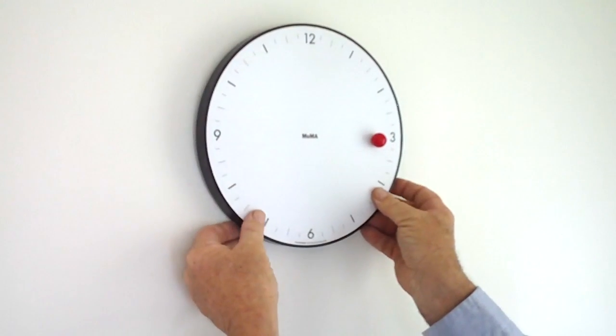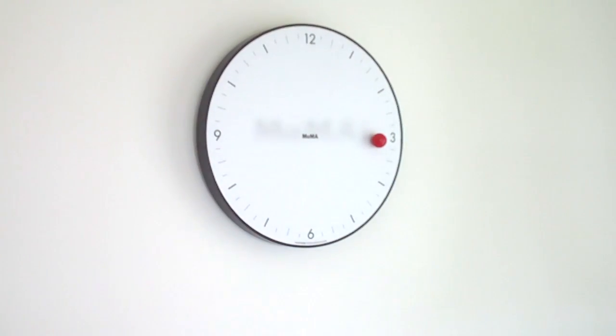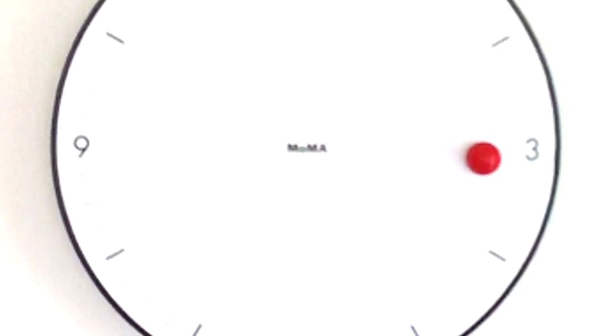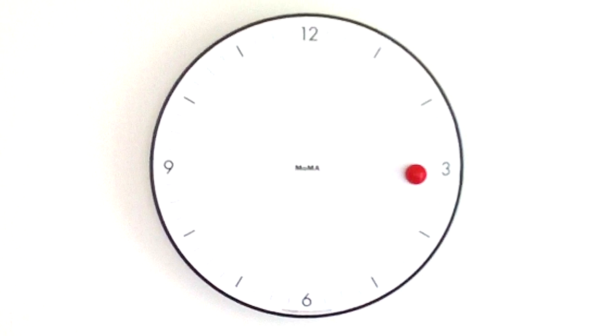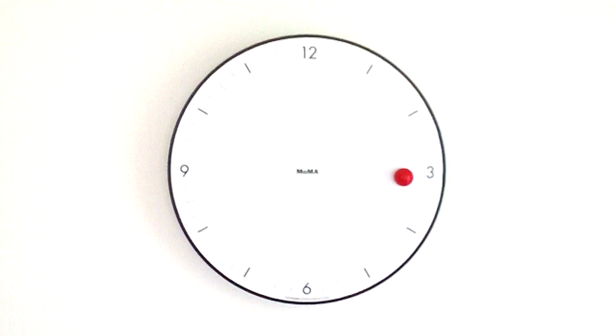Clean the face of the clock with a damp cloth when necessary. The path of the magnetic ball attracts dust. Replace the battery when the clock no longer keeps accurate time.